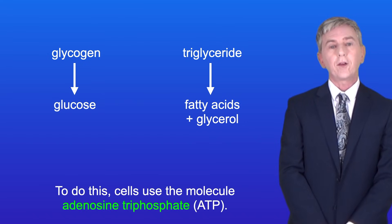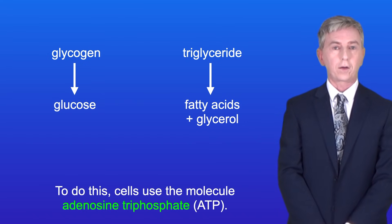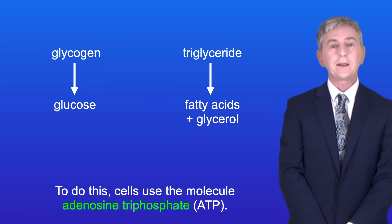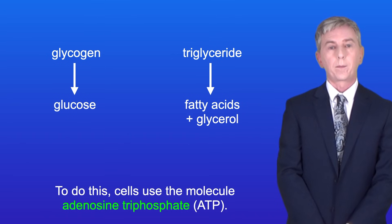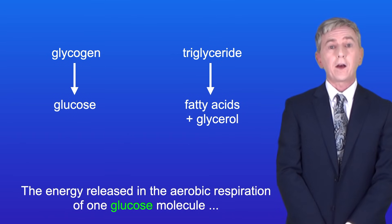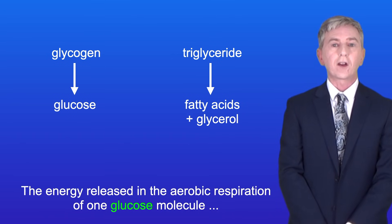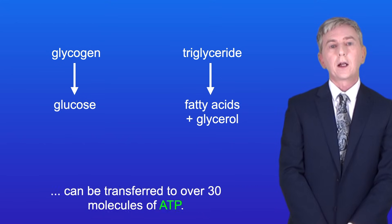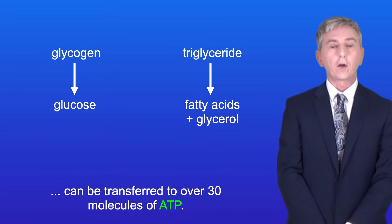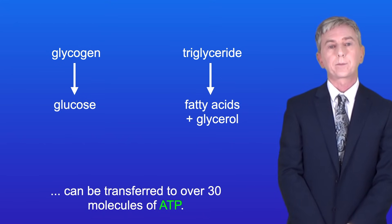To do this, cells use the molecule adenosine triphosphate, or ATP for short. In fact, the energy released in the aerobic respiration of one glucose molecule can be transferred to over 30 molecules of ATP.